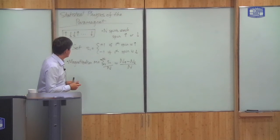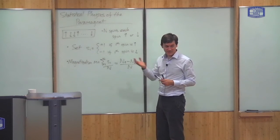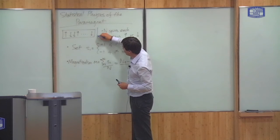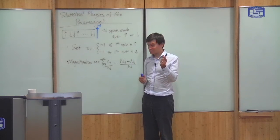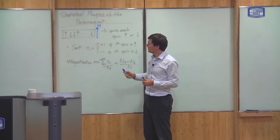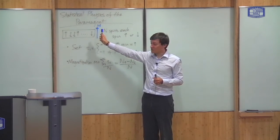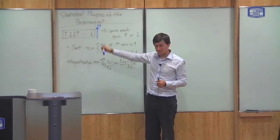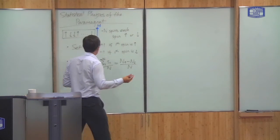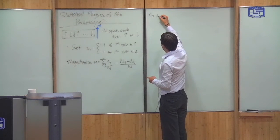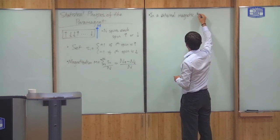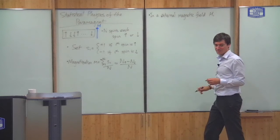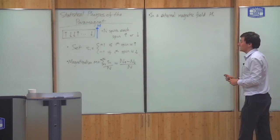What we're going to do differently this time is imagine that the paramagnet is in a magnetic field. I put an external magnetic field here, which I give the symbol H. Because of the magnetic field, there's some energy difference between up spins and down spins. In particular, the spins try to point in the same direction as the field, which means the up spin has a lower energy than the down spin.